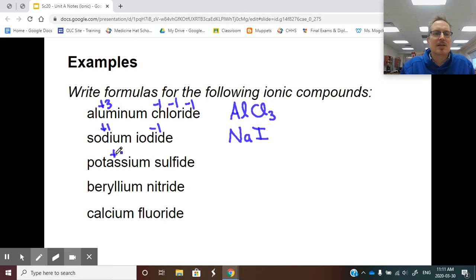Potassium is positive one. Sulfur is negative two. So I need another potassium. So I need one, two potassiums. K2S. Beryllium is positive two. Nitrogen is negative three. So I'm going to need another beryllium. That's positive four. I'm going to need another nitrogen. And I'm going to need another beryllium. So I need three berylliums and two nitrogens. This is going to be Be3N2.